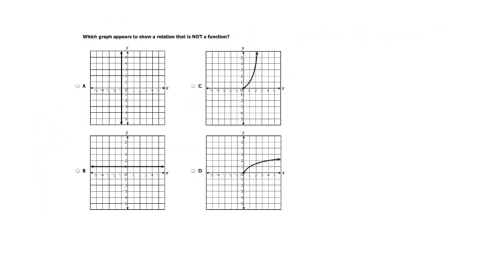Which graph appears to show a relation that is NOT a function? Make sure you read the question carefully. Choice A is a vertical line, which will definitely not pass the vertical line test because one vertical line touches every point of that graph. So A is not a function.